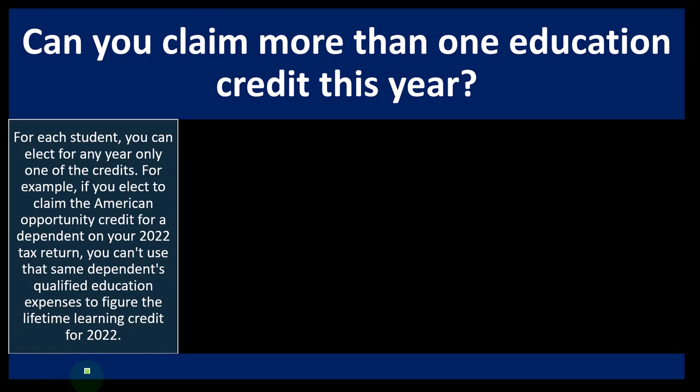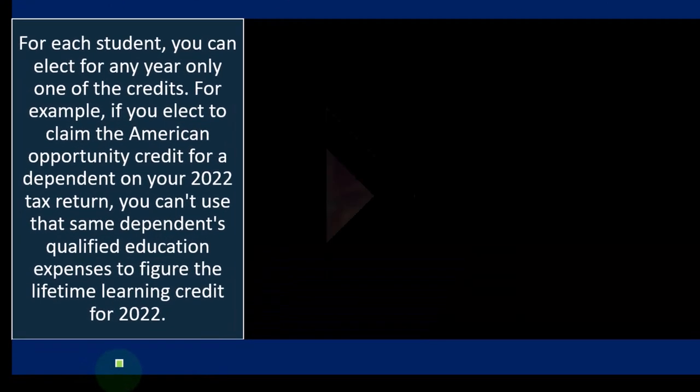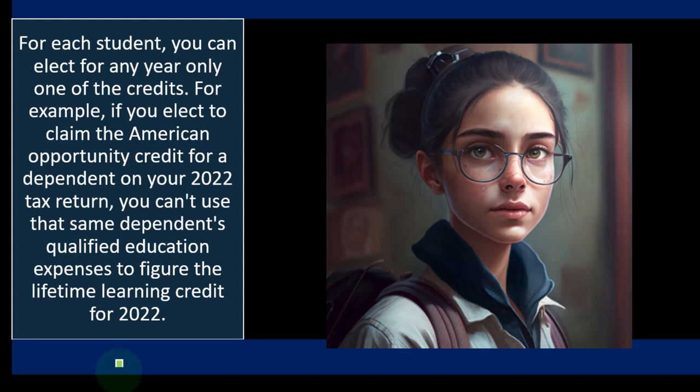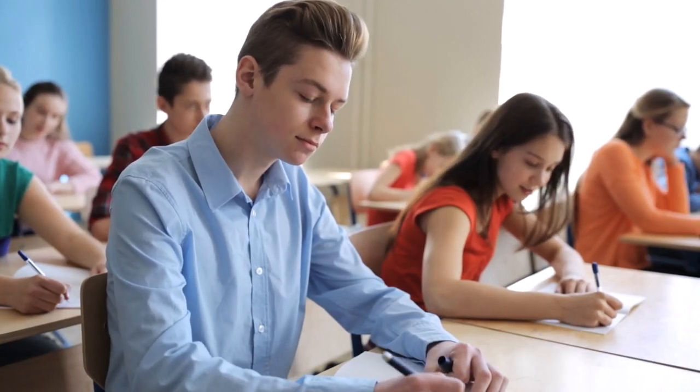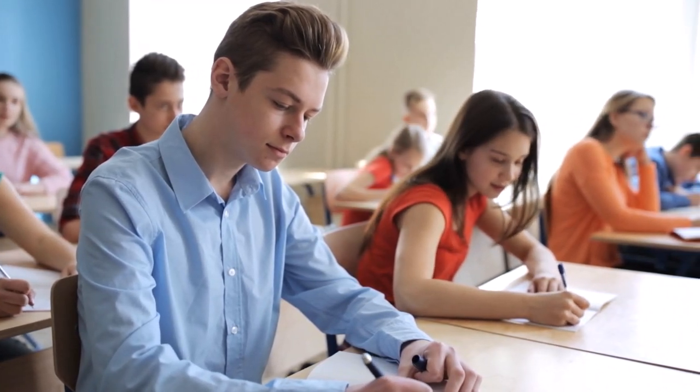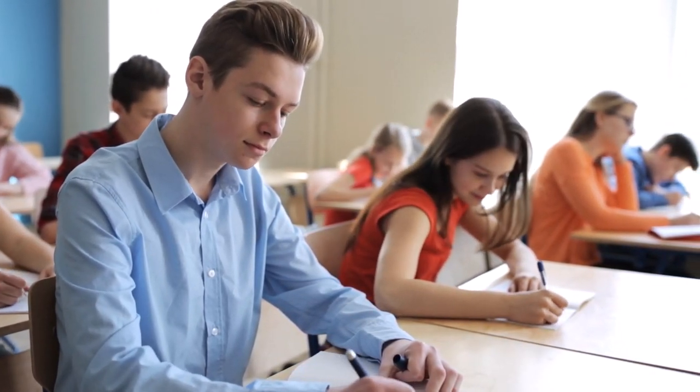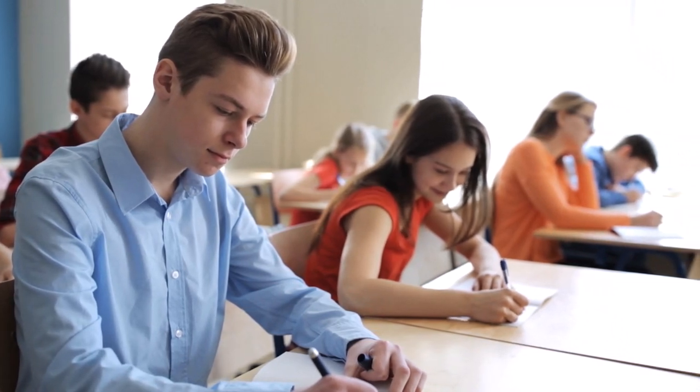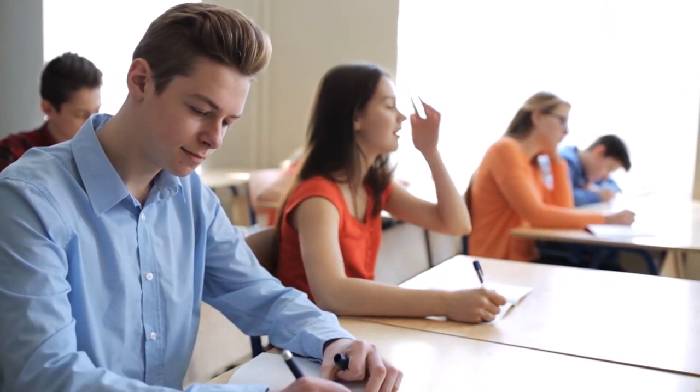Can you claim more than one education credit this year? For each student, you can elect for any year only one of the credits. For example, if you elect to claim the American Opportunity Credit for a dependent on your 2022 tax return, you can't use the same dependent's qualified education expenses to figure the Lifetime Learning Credit. You have to pick one or the other for that student, tied to their Social Security number.